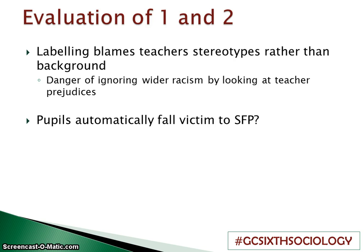An evaluation of labelling and pupil responses: labelling theory very much blames teachers for stereotypes rather than background, so it's very internal and doesn't take into consideration anything outside of school. There's a danger it ignores wider racism in society by focusing only on the teacher — it could be racism within educational policies or government institutions. Also, there is an assumption that pupils automatically fall into a negative self-fulfilling prophecy, but we know that isn't necessarily the case, as there are examples of people who have achieved as a result of negative labelling.